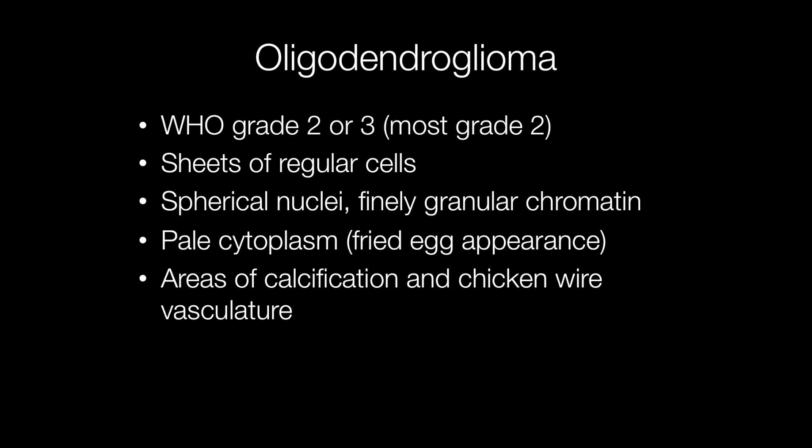The grade 3 oligodendrogliomas show features such as necrosis, increased vascularity, and increased mitotic activity. These were previously known as anaplastic but are now just regarded as grade 3 oligodendrogliomas.